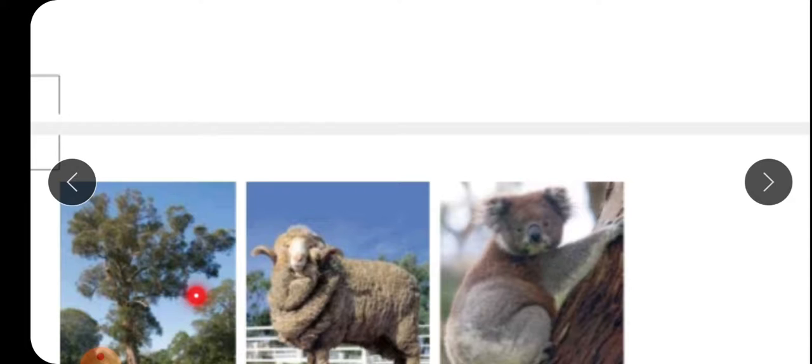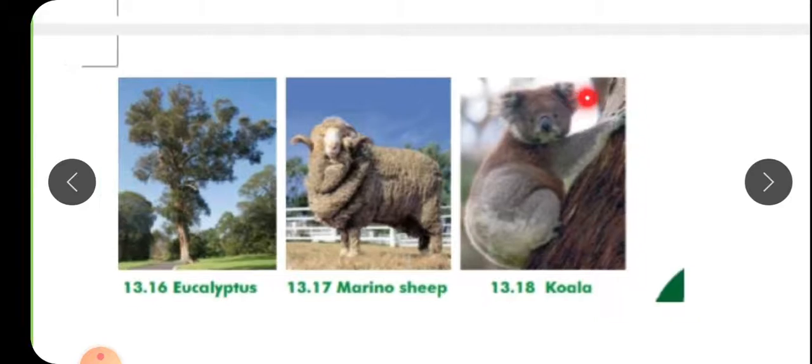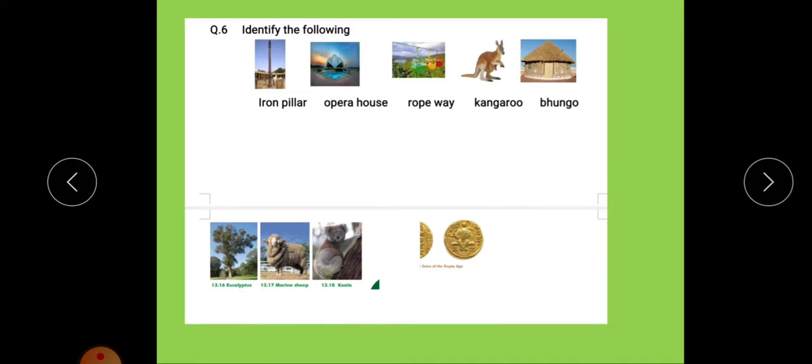Which tree is this? Eucalyptus. Which sheep is this? Merino sheep. And what is this? Koala. Okay, complete identify the following.